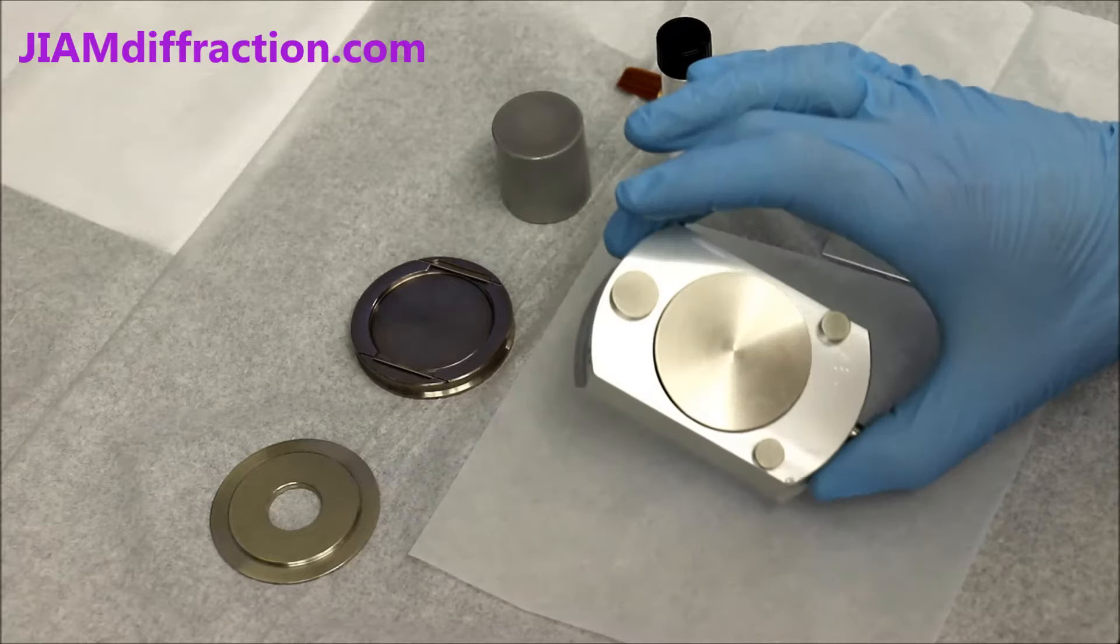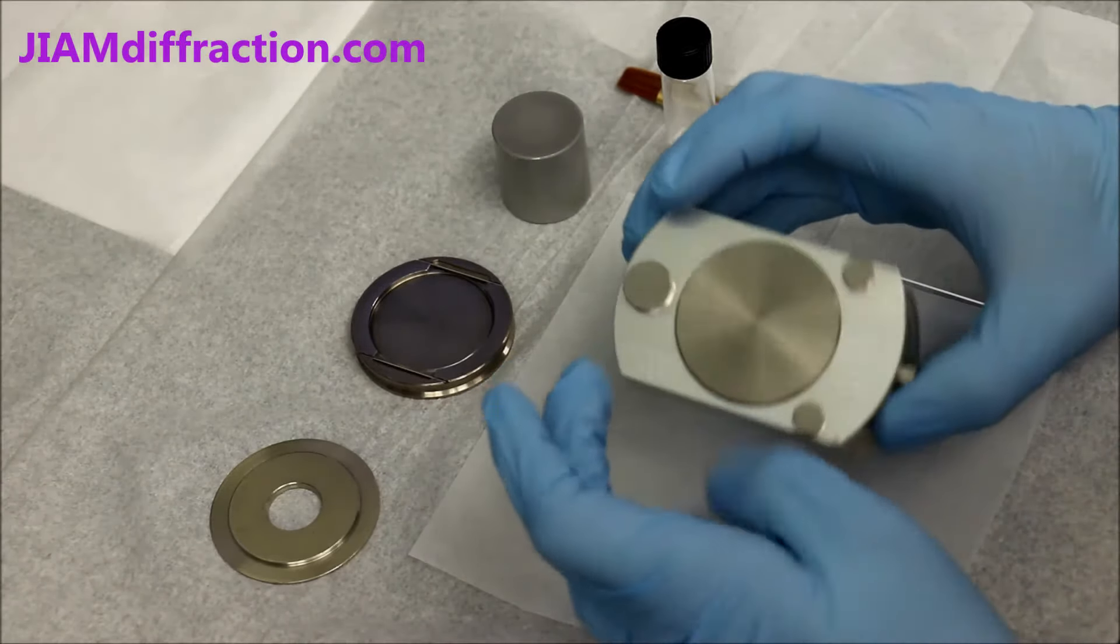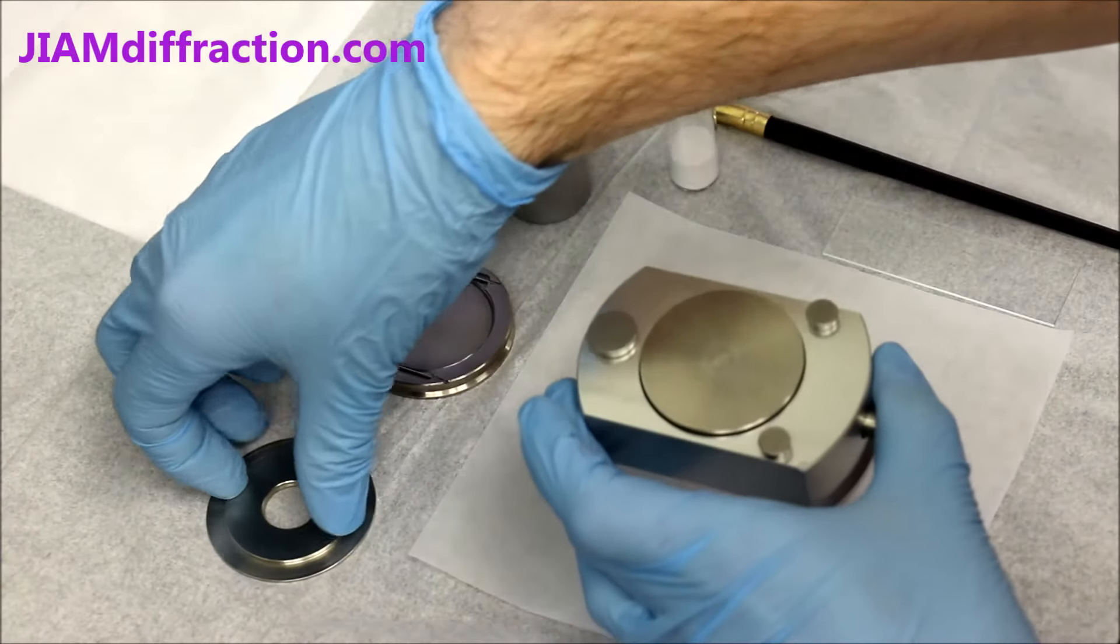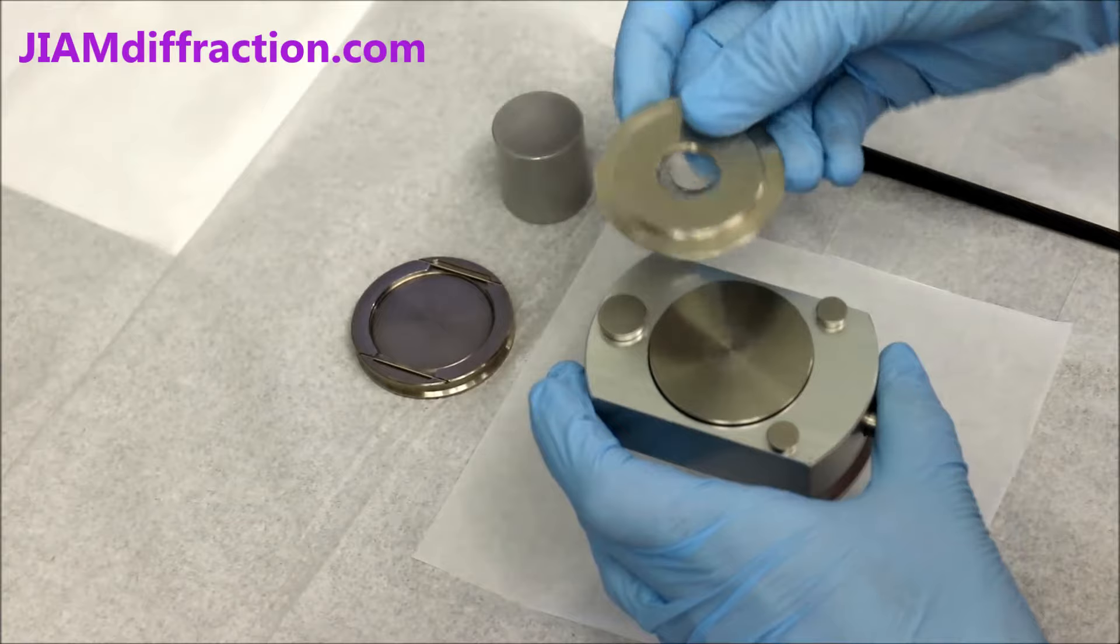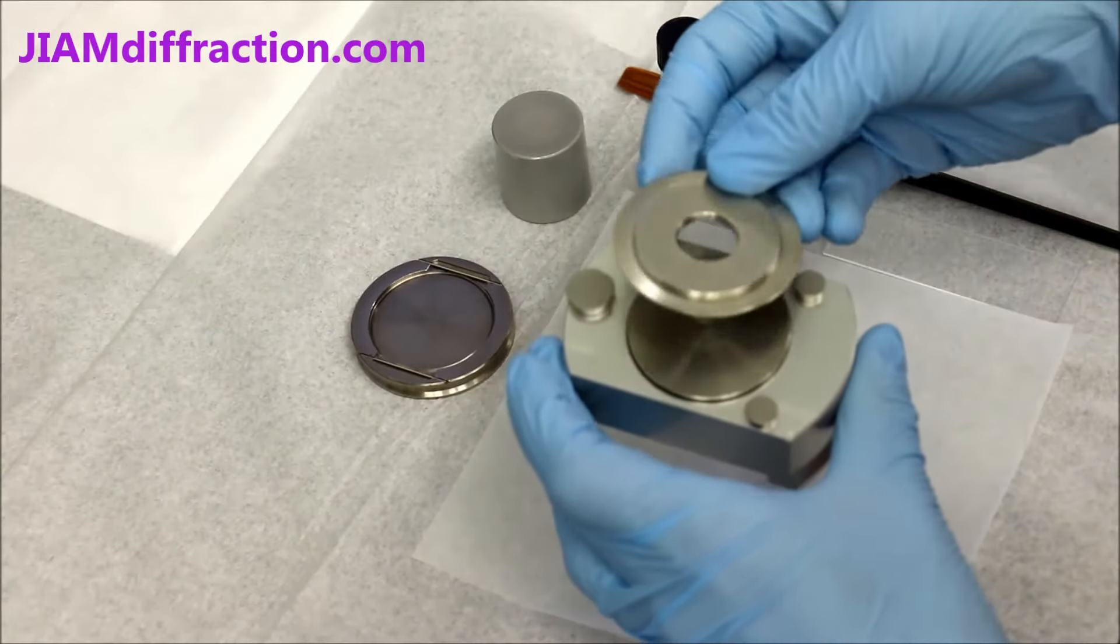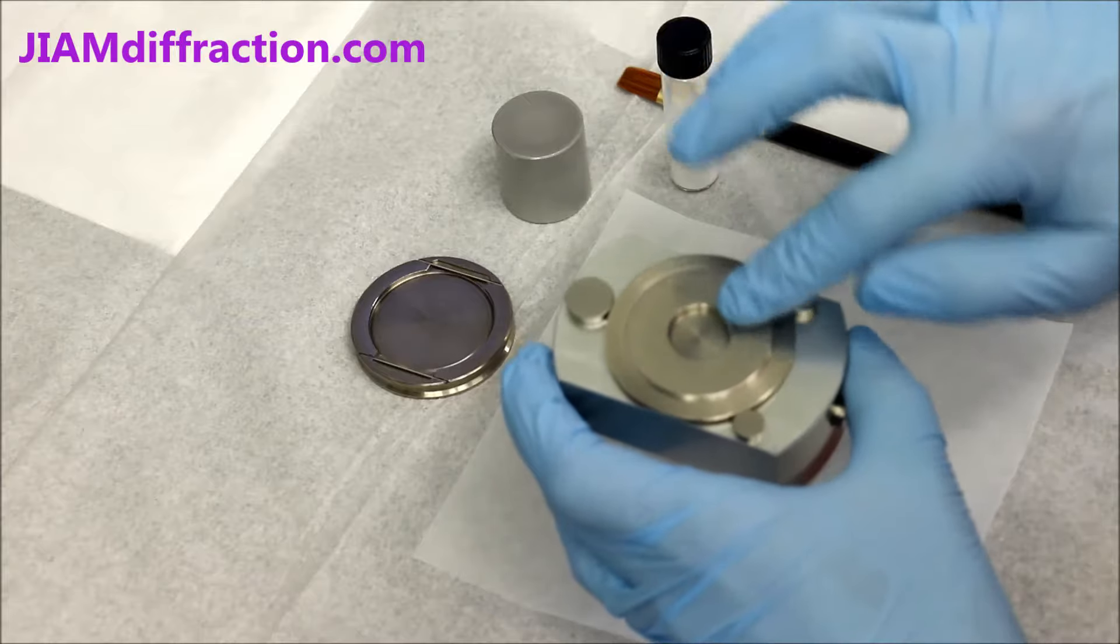The main block is shown here, and on the side there's a button that moves this piece. So what we want to do is take the top part of the sample holder, and with the flat side down, push the button, place it in the center, release the button, and it locks it in place.